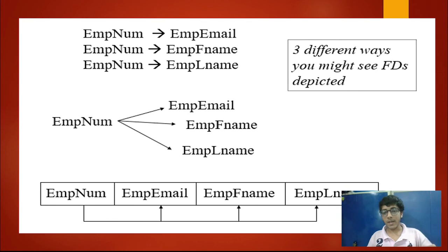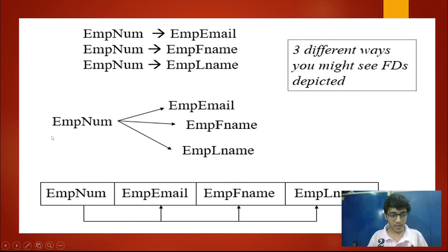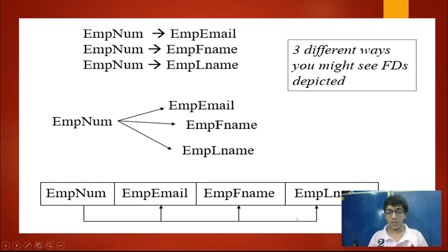There are three different ways to represent functional dependencies. The normal way lists each: employee number determines employee email, employee number determines employee first name, and employee number determines employee last name. There's also a tree-like structure showing all three parts, and a table format showing arrows where employee number determines employee email, employee first name, and employee last name.